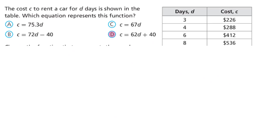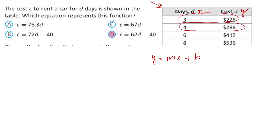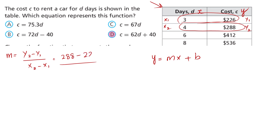Next question: the cost c to rent a car for d days is shown here. This is x and this is our y. Write the equation. To write the equation, we have y equals mx plus b. Choose any two points — let's choose these two. This one is x1, x2, and the corresponding values are y1, y2. The slope formula is y2 minus y1 over x2 minus x1. So replace: y2 is 288 minus y1 which is 226, and x2 is 4 minus x1 which is 3.